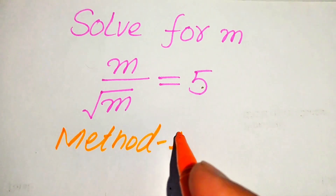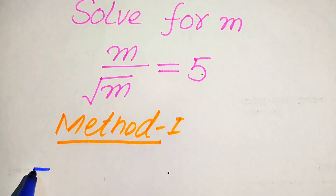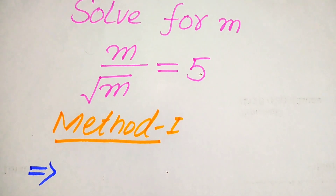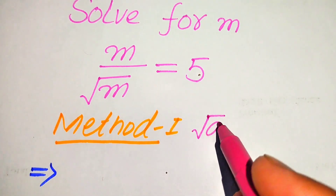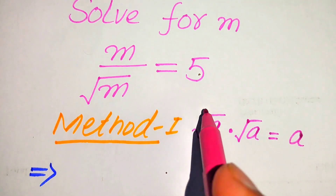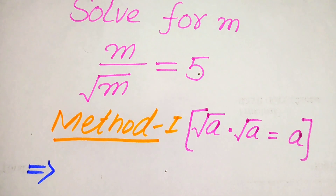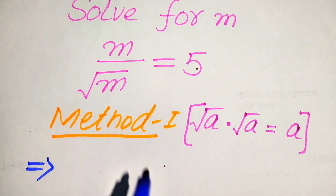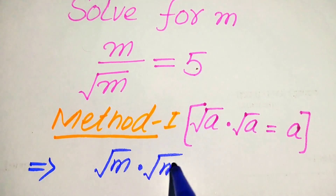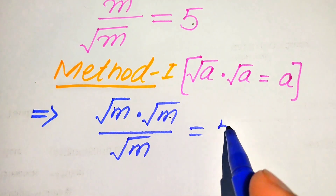In the first method, we focus on the numerator term. We write the numerator m using the nice square root rule: if we have square root of a multiplied by square root of a, we write it as a only, because when we multiply these two terms the square roots cancel. So we write m as square root of m multiplied by square root of m, divided by square root of m, equals 5.